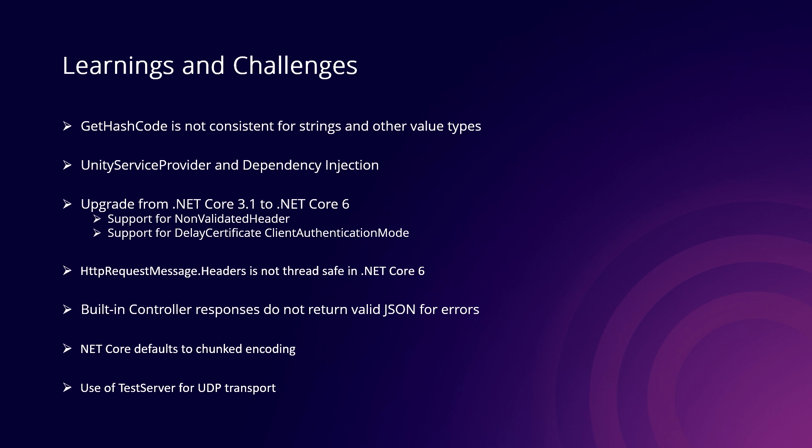We initially rolled out on .NET Core 3.1, but after rollout we found it does not support non-validated headers. Some customers were sending malformed VIA headers that didn't follow the correct syntax, and .NET Core 3.1 had no way to skip validation for those headers. In the middle of the rollout, we had to roll back and upgrade to .NET Core 6, which resolved this issue.